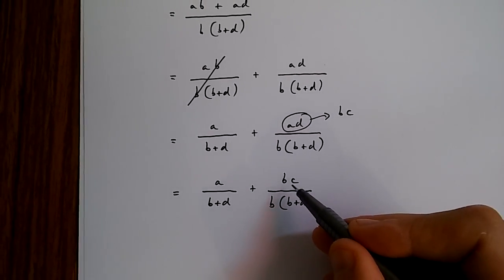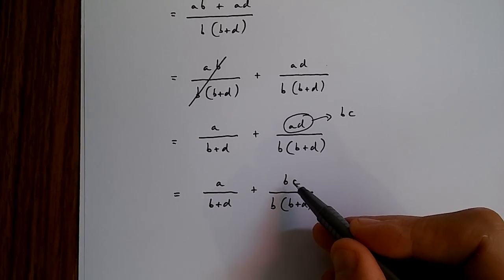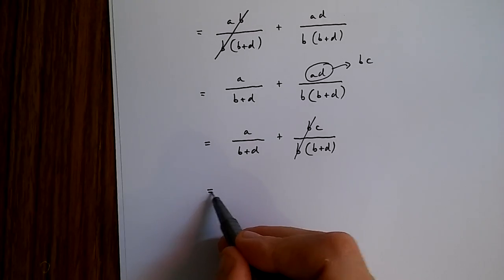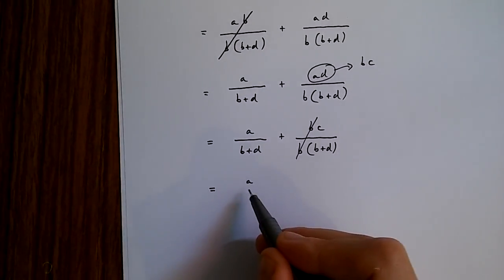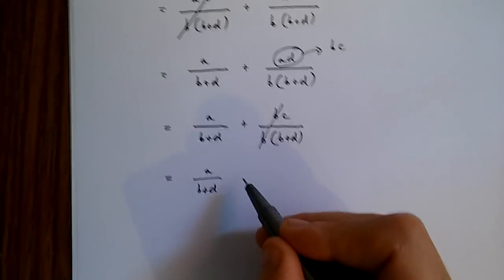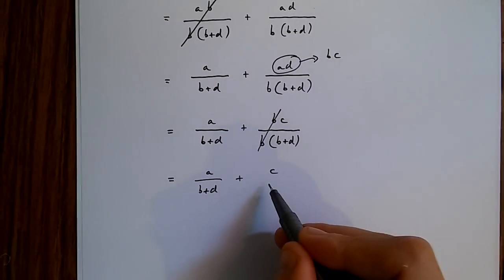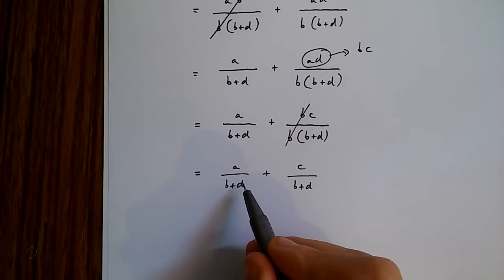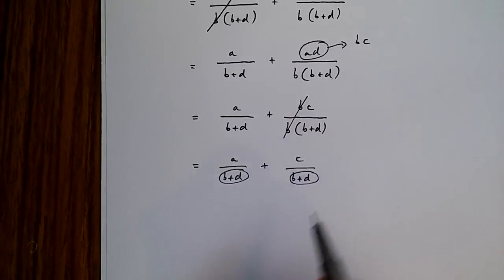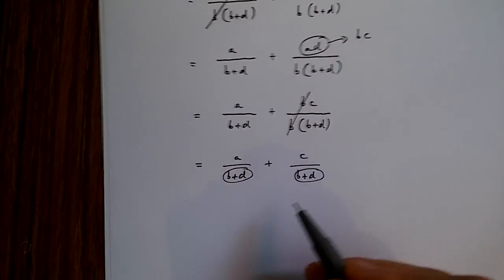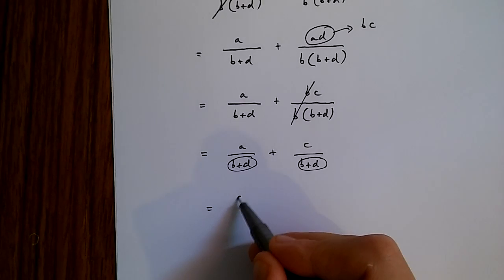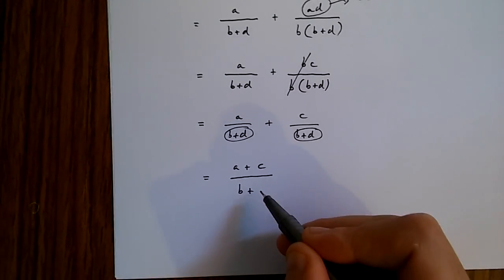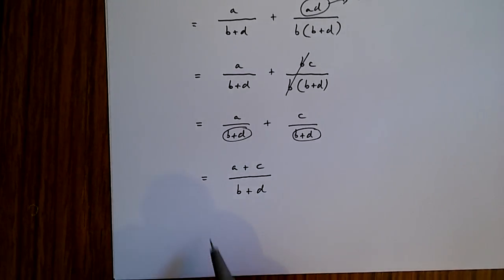Now, we can delete the b at the top and bottom of this fraction. So we end up with a over b plus d plus c over b plus d. Now, because the denominators are the same, we end up getting a plus c over b plus d.